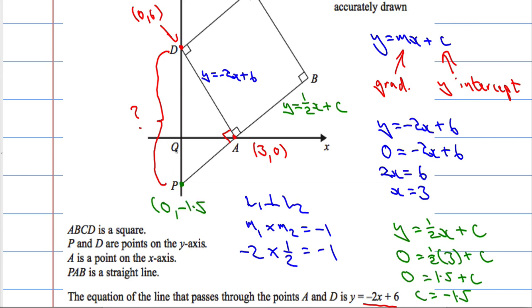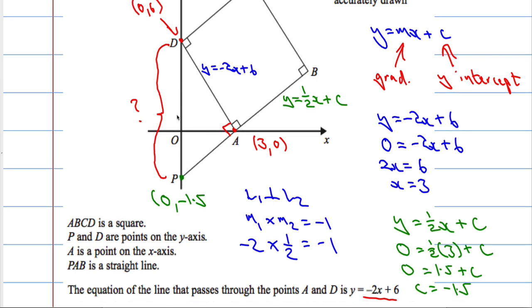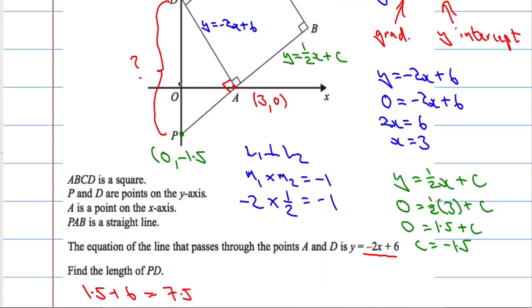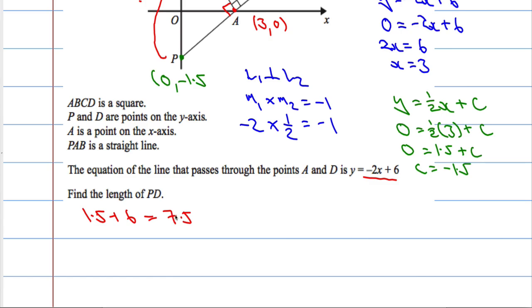Therefore, I can work out the whole length of this, because it goes from minus 1.5 all the way up to 6, which means that the length of PD must be 1.5 plus 6, which is 7.5. So it goes all the way from minus 1.5 up to 6, which is 7.5.